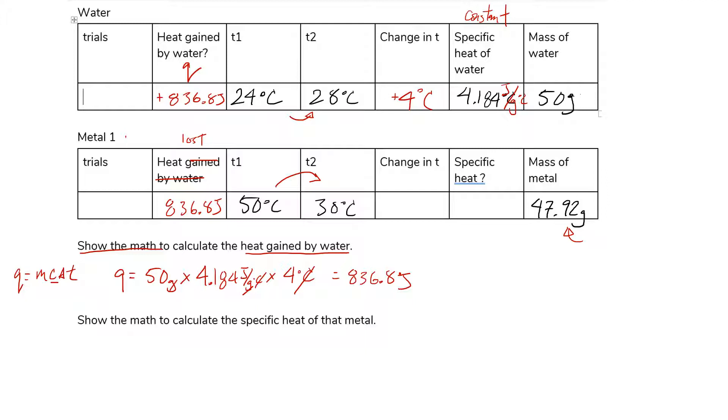And what we want is actually the specific heat of this metal. We want that little c. And if I rearrange this equation here, I will get little c is equal to big Q divided by m delta T. So let's plug that in.